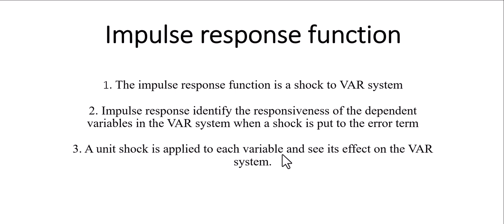In the impulse response function, we are giving shocks to any variable and we will see how it affects that particular variable or the dependent variable in some future time period. Simply put, it is the response — what a dependent variable responds to when any shock is given to any variable or any error term in the system, and how the dependent variable will respond.